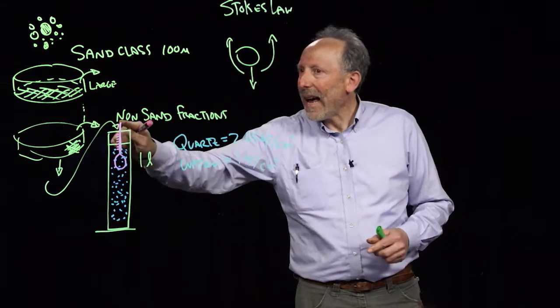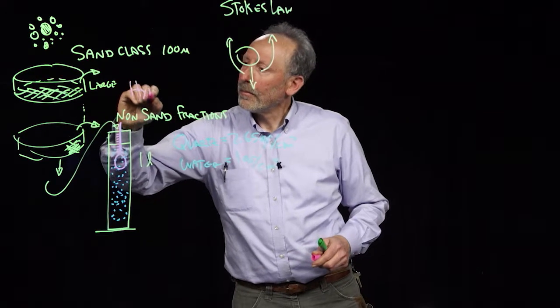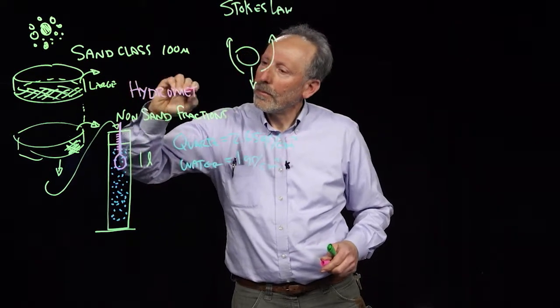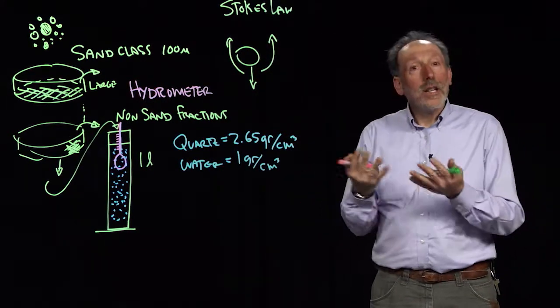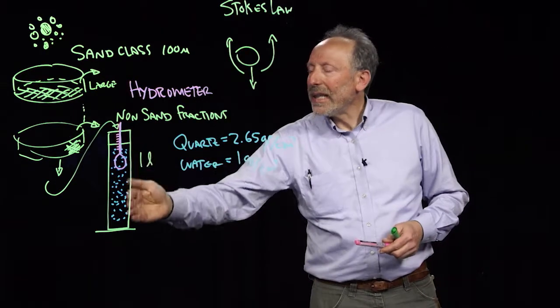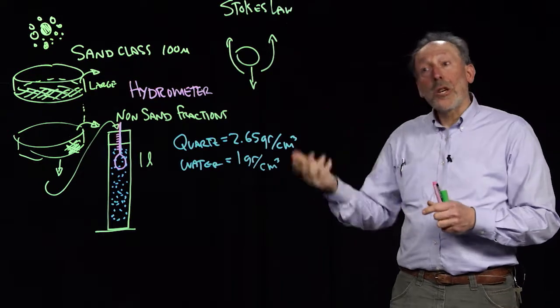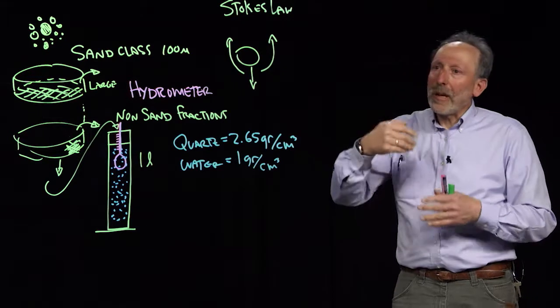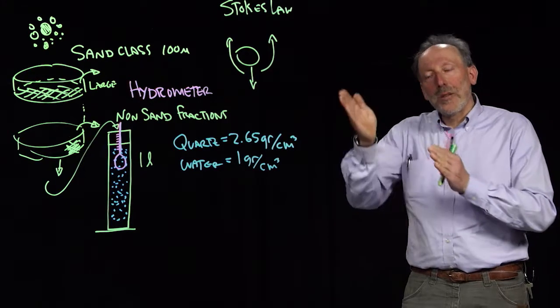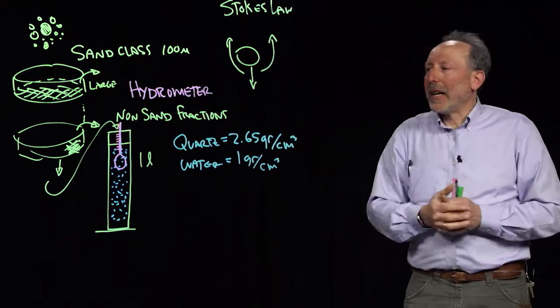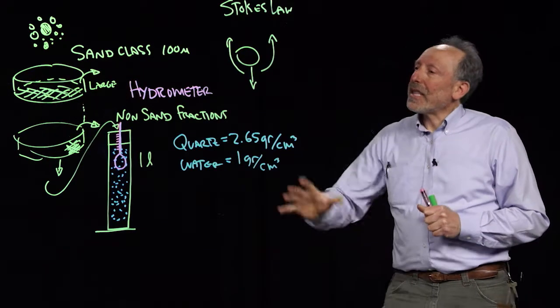And so by tracking exactly the height at which this hydrometer, by tracking the exact height of the hydrometer in time, we can know the density. And by knowing the density, we can see what fraction of these particles have settled out and thereby get the particle size distribution. Because the large particles left quickly and then in time slower and slower settling particles drop out of solution giving rise to asymptotically the final water density. So this is the hydrometer method.